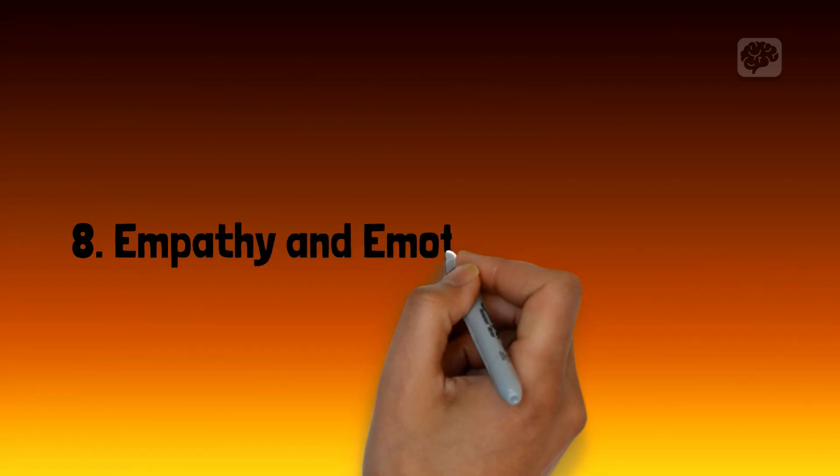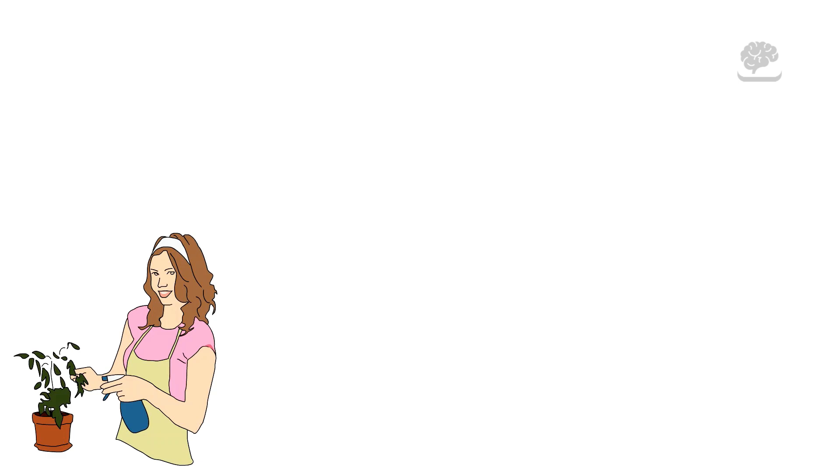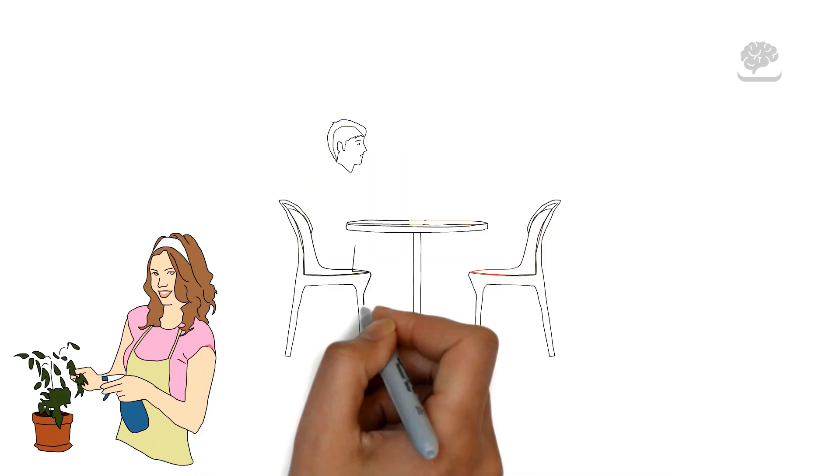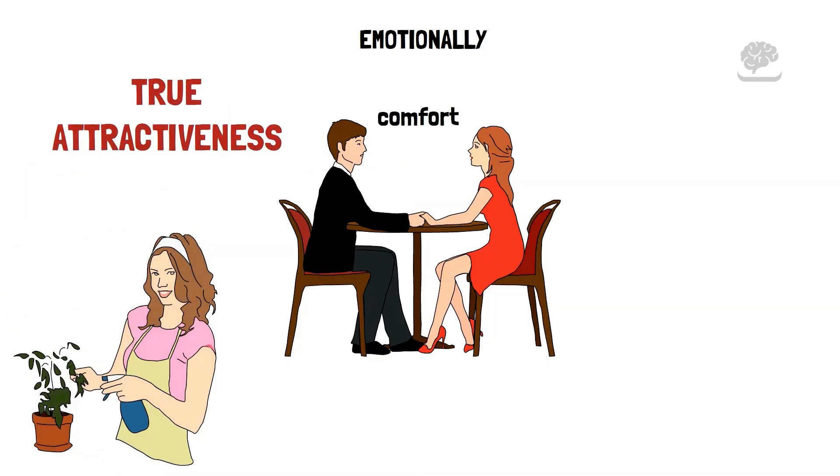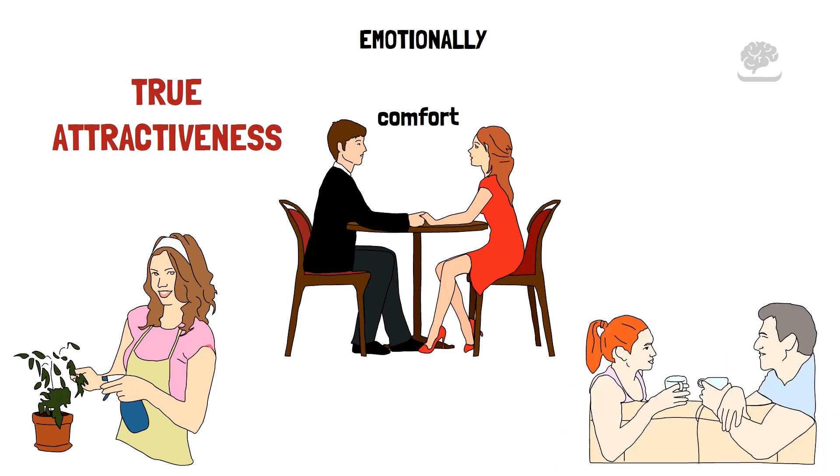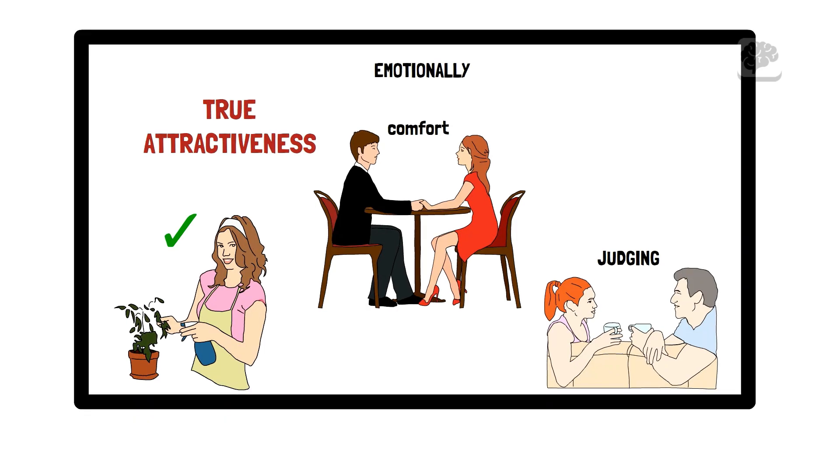Number 8: Empathy and Emotional Intelligence. Being attractive goes beyond looks and is about understanding and empathizing with others. If you can connect emotionally and give comfort, it shows your true attractiveness. Your real empathy helps build strong relationships and connections with people. When you listen without judging and offer support in difficult times, it makes you more attractive. This deep connection affects people's lives positively.